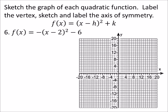Go back for a second. So F of X equals this negative, and then we got this binomial squared minus 6. And right away, we can see that the H value here is 2. And since it's already minus, H is just 2.